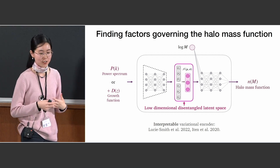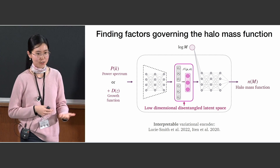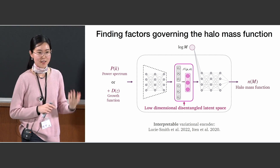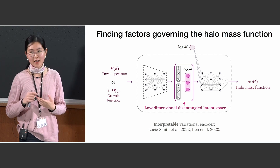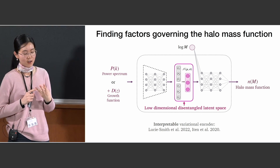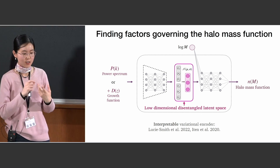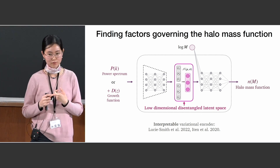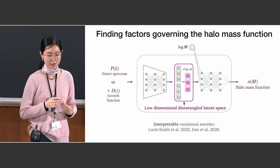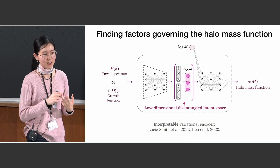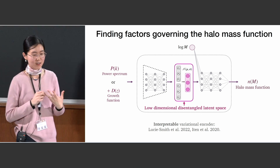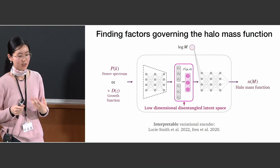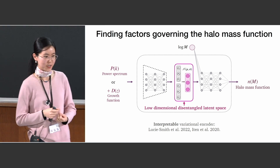The latent space is low-dimensional — for our case, to predict the mass function at redshift zero, we only need three latent variables. It is also disentangled, meaning each of the three latent variables learns independent information about the halo mass function. This enables us to interpret what each latent variable has learned about the mass function and to relate that to the physics of halo formation.